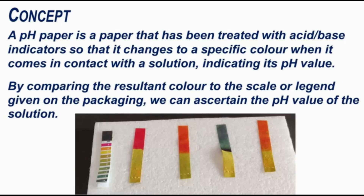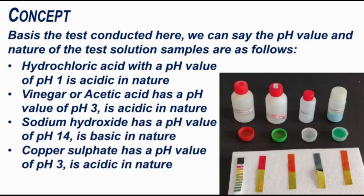In our activity, HCl has a pH value of 1, and acetic acid (vinegar) and copper sulfate both have a pH of 3. Based on the test conducted, HCl with a pH value of 1 is acidic — it is a strong acid.